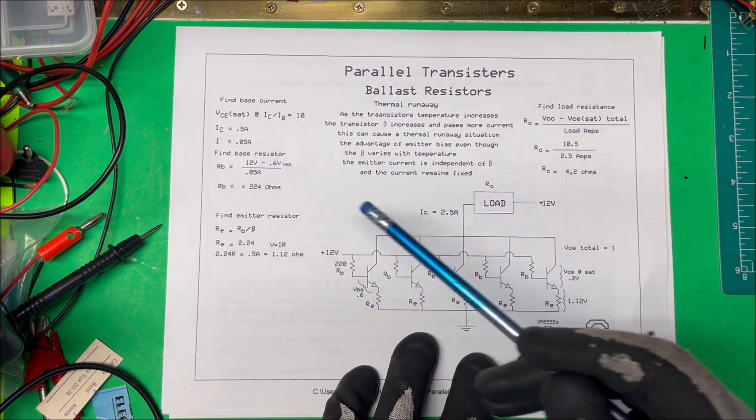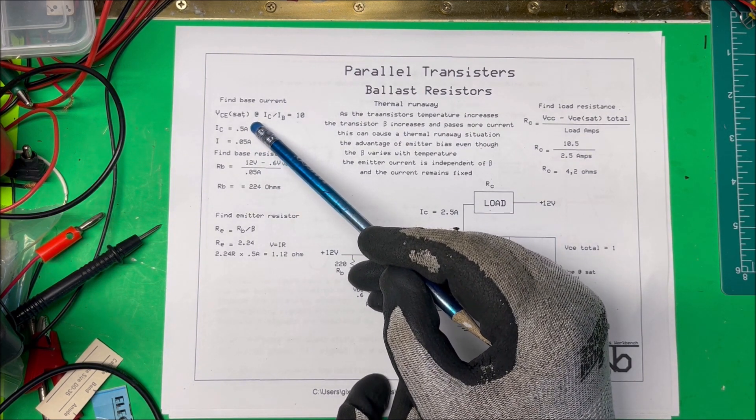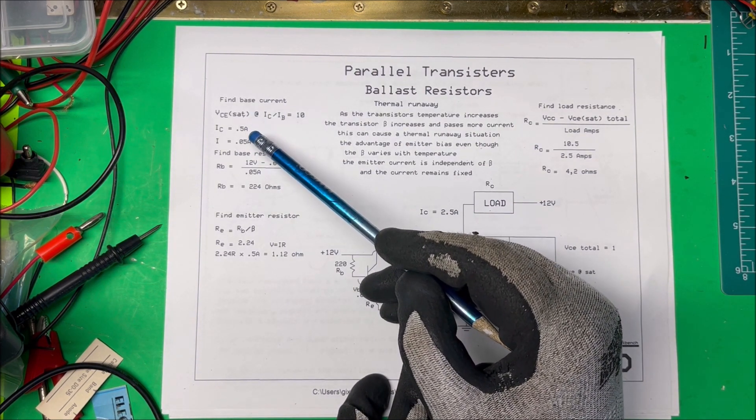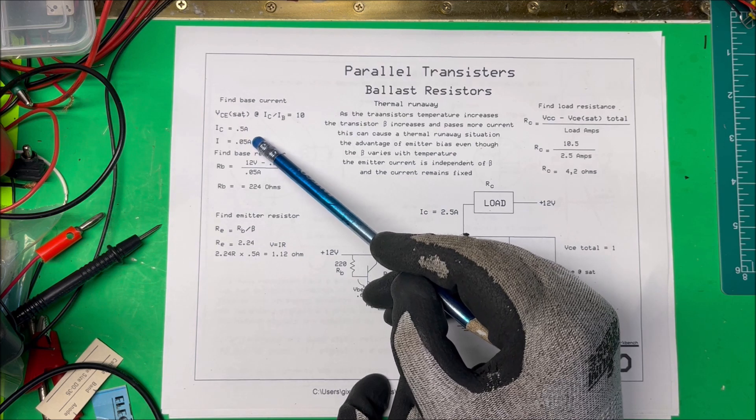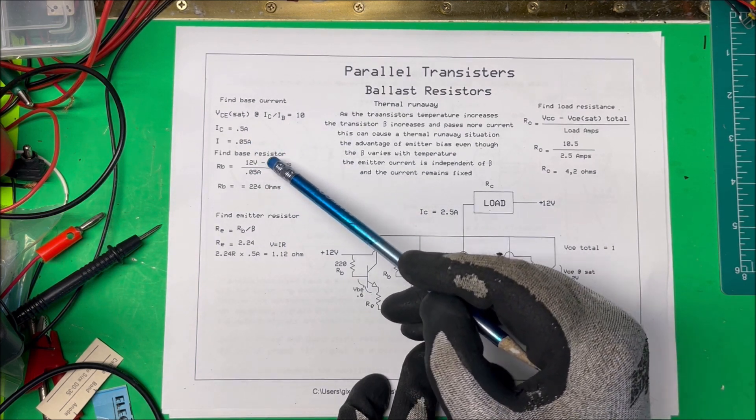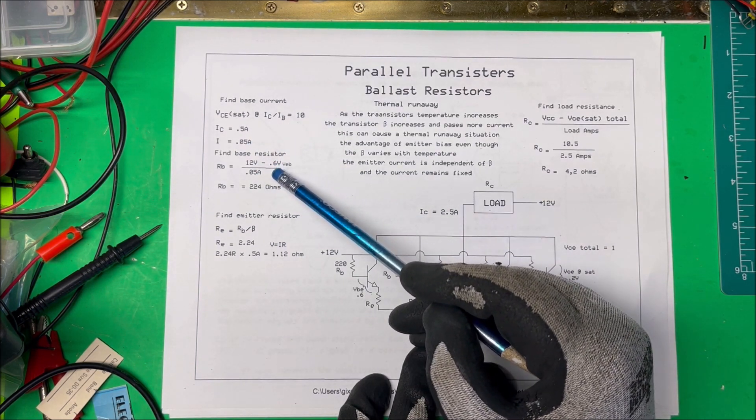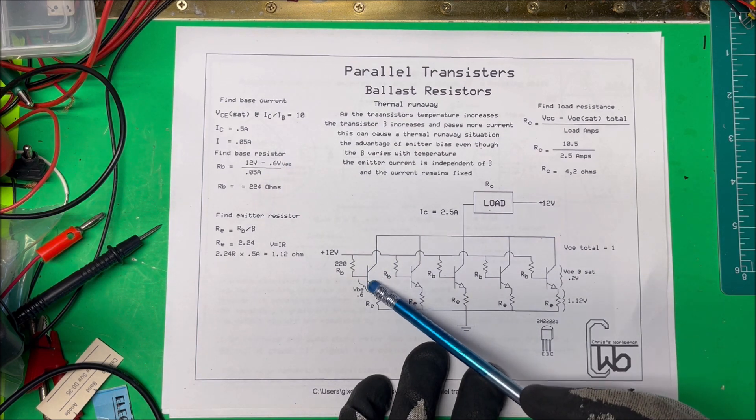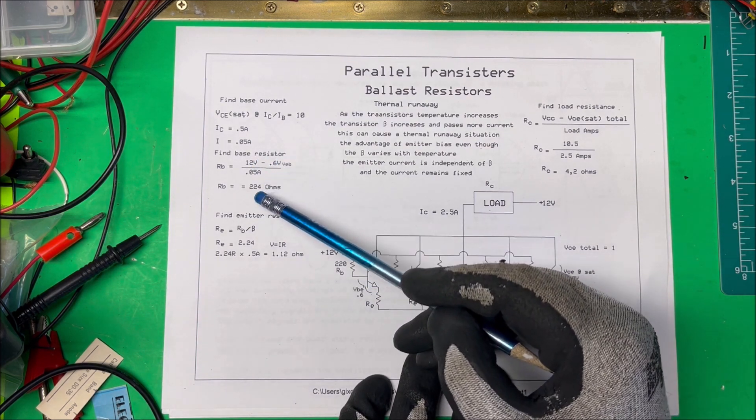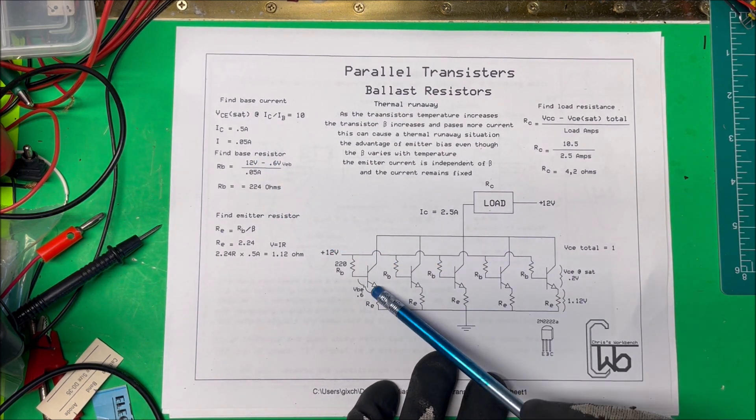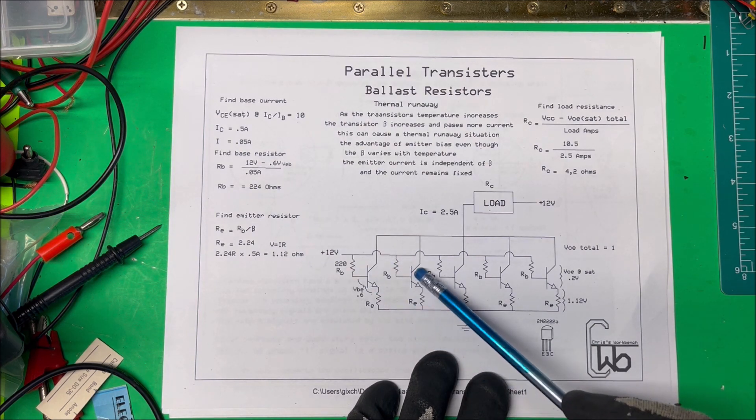And so I'm going to go for 0.5 amps on the collector and so the base current is going to be 0.05 amps. And then I just do the ohms law there. Now you do have a 0.6 volt drop across here, we take that away and it comes out to 220 ohms on these base resistors here.